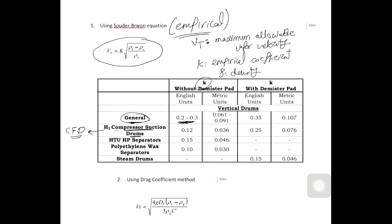If the subscript is L, this refers to liquid, and V refers to vapor. These empirical correlations can be used to calculate the maximum allowable vapor velocity, which is then used to calculate the minimum diameter of the vessel — we will discuss this point later.